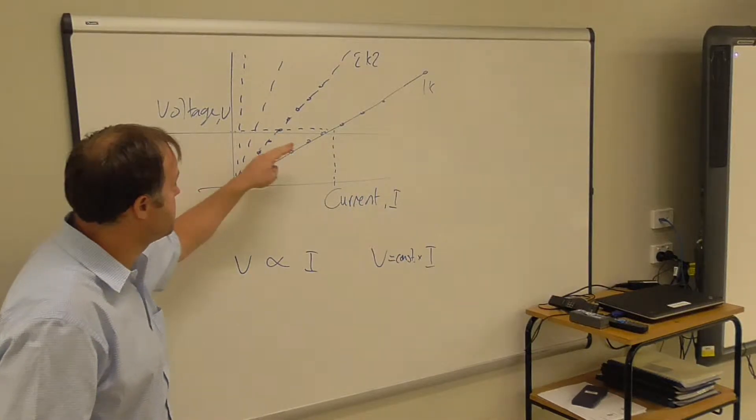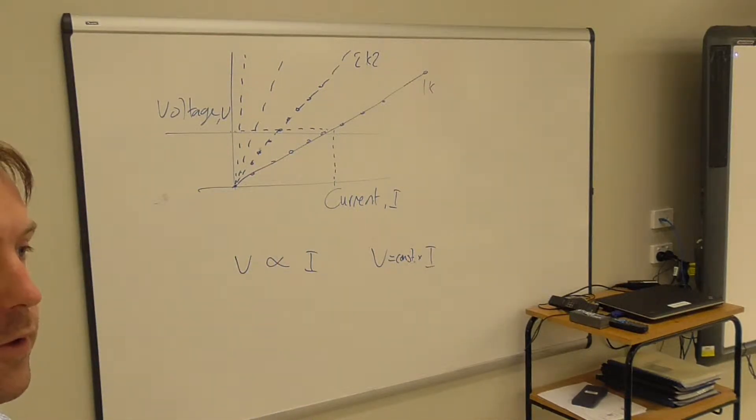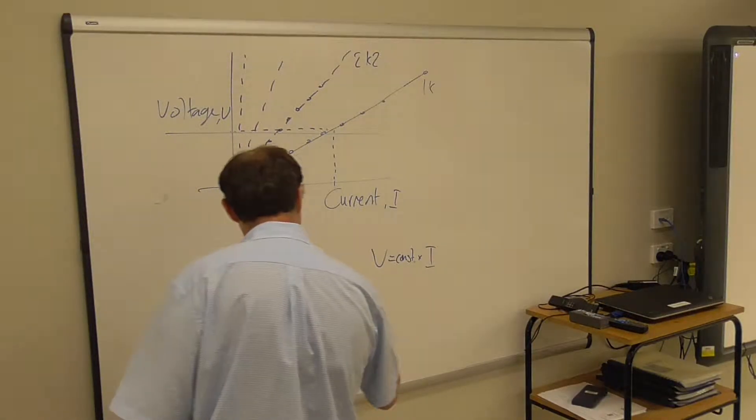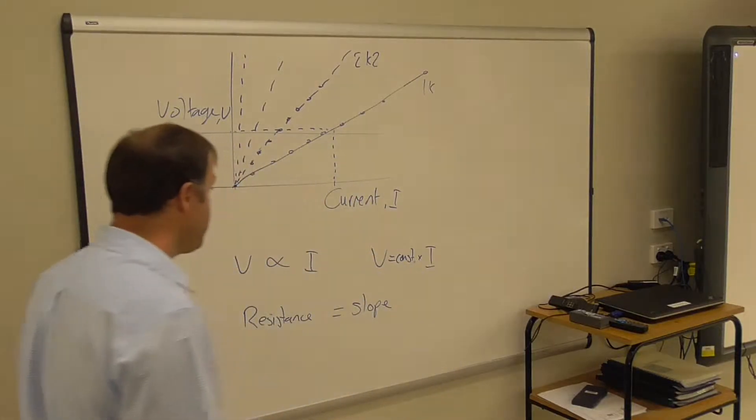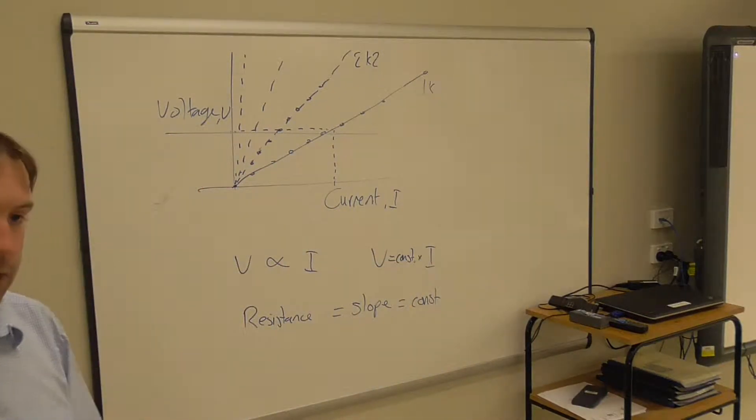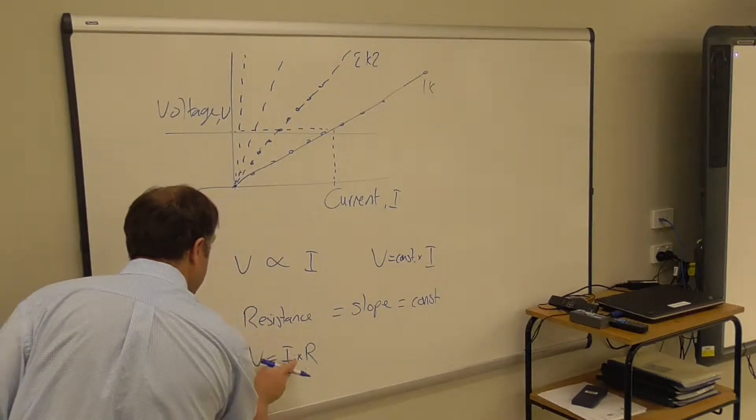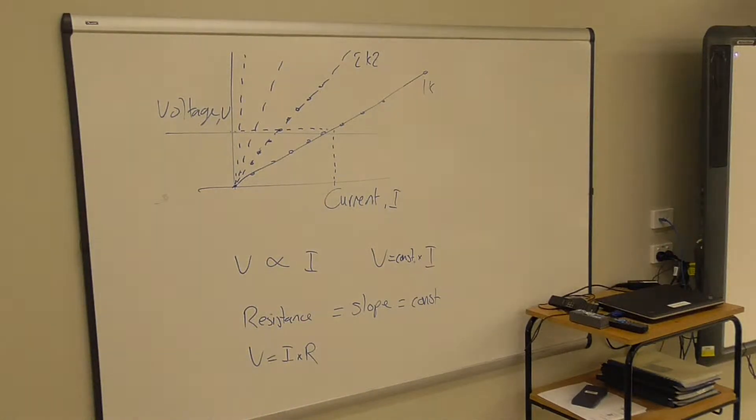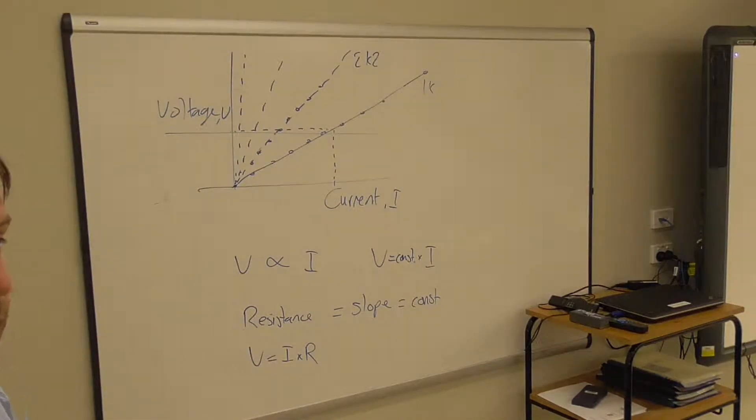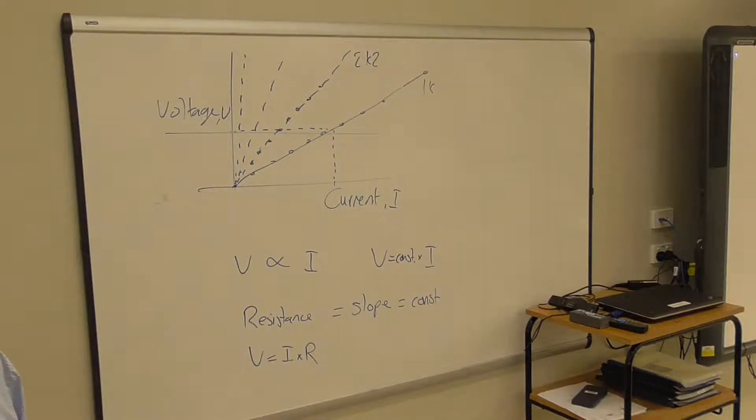And so that means that the slope of that graph is equal to the constant. So we'd say that resistance is equal to the slope, which in this case is equal to our constant. So I could rearrange that into a formula, V equals I times our constant. For our constant, it's the resistance. And so the first guy to work this out was George Simon Ohm, way back when, and so this is called Ohm's law. So the law means that it follows a pattern that's set, but not all conductors follow this law.